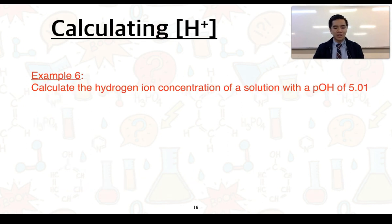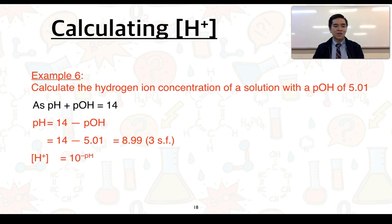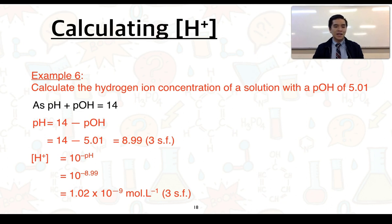Example 6: calculate the hydrogen ion concentration of a solution with a pOH of 5.01. Using pH + pOH = 14, pH equals 14 − 5.01 = 8.99. Then [H⁺] = 10⁻⁸·⁹⁹ = 1.02 × 10⁻⁹ mol/L — a fairly low concentration, as expected for an alkaline solution. In class, we'll look at more examples using these formulas and rearrangements to solve for concentration, pH, or pOH.